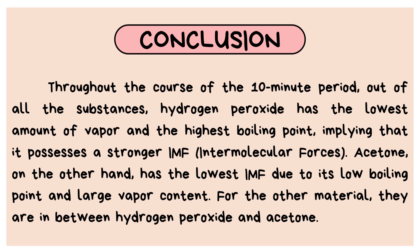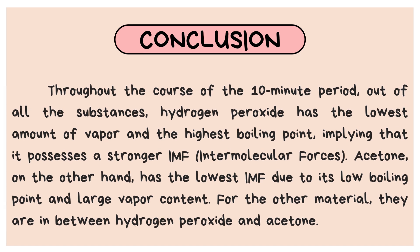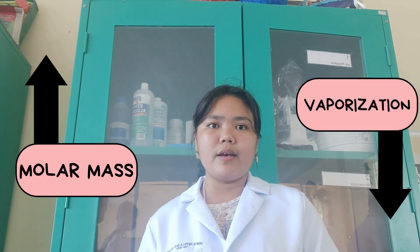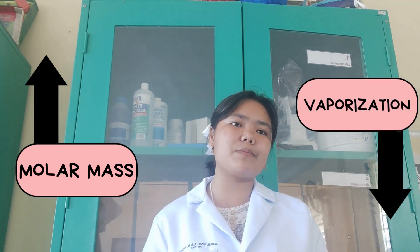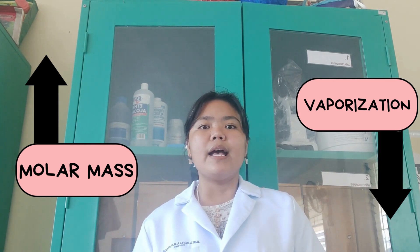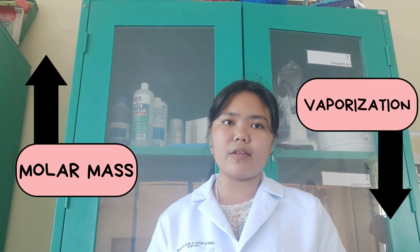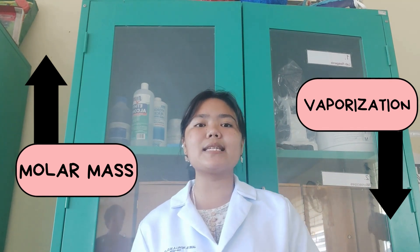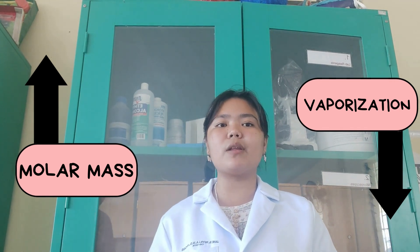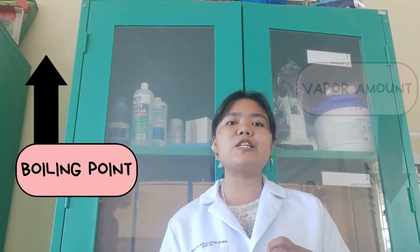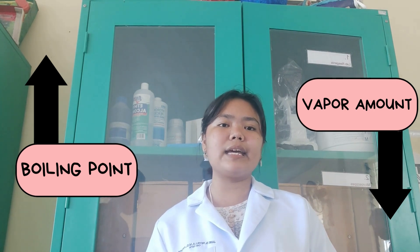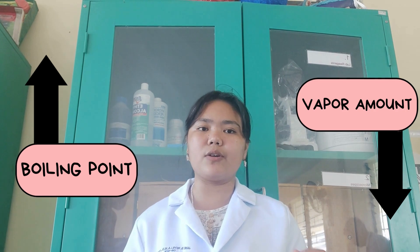For the other materials, they are in between hydrogen peroxide and acetone. Here are some keynotes our group would like to share. First, high molar mass means lower vaporization. If molecules have very different molar masses by a factor of 2 or more, then they have very different London force strength. In this case, the one with a much higher molar mass will have the strongest intermolecular force overall. Additionally, higher boiling points mean lower vapor amount, which also indicates the strongest intermolecular force.